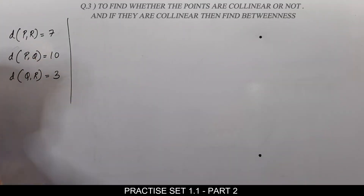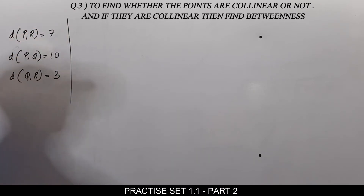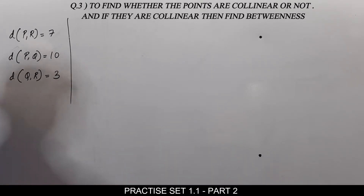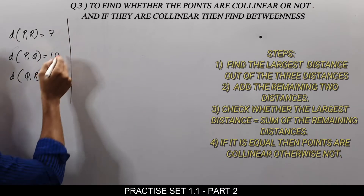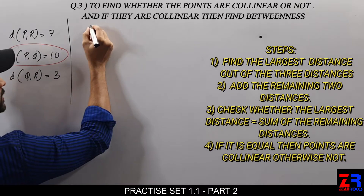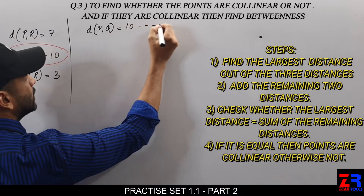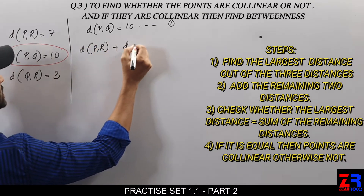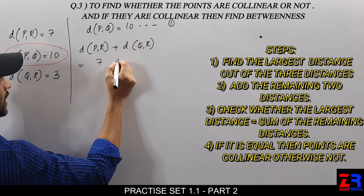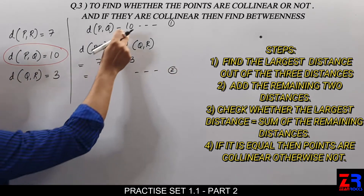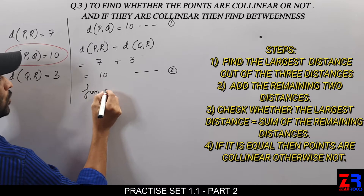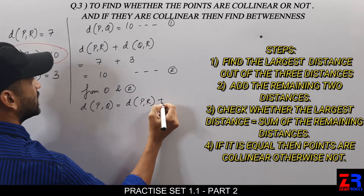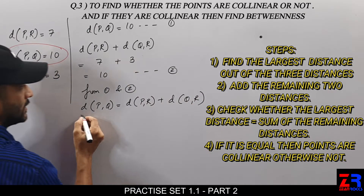This is Question 3, Sub-Question 1. We are given PR, PQ and QR and we are supposed to find whether points P, Q and R are collinear or not. First, check which is the biggest side — it is PQ. Distance PQ is equal to 10. Now we check the rest of the two: distance PR plus distance QR is equal to 7 plus 3, which is equal to 10. Distance PQ equals 10 from equation 1, and distance PR plus distance QR equals 10 from equation 2. From 1 and 2, distance PQ is equal to distance PR plus distance QR.